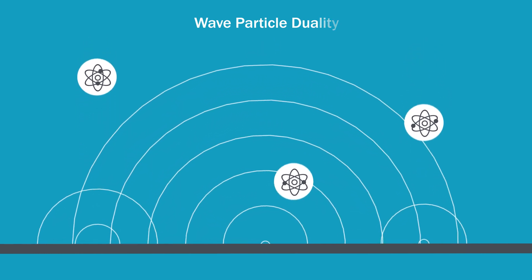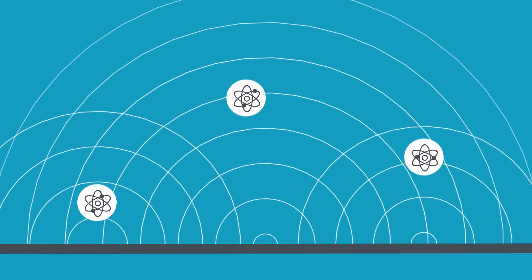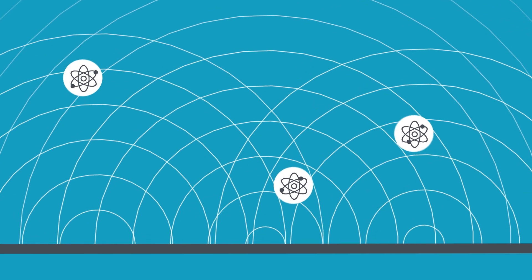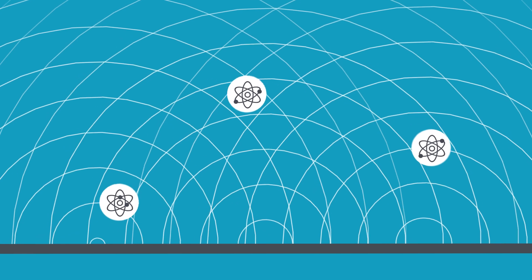So there's a probability of them being in a certain position or moving at a certain speed, and they can spread themselves out across all these probabilities until we measure it. And when we measure it, that's when we know its true quantum state.